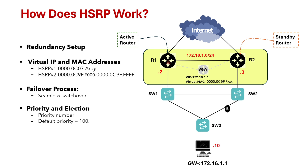Suppose you have one router with the highest priority and it is the active router. When the active router fails, the standby router takes over. But when the active router comes back online, the standby router is still active because in HSRP preemption is not enabled by default. You can change this behavior by enabling preemption.